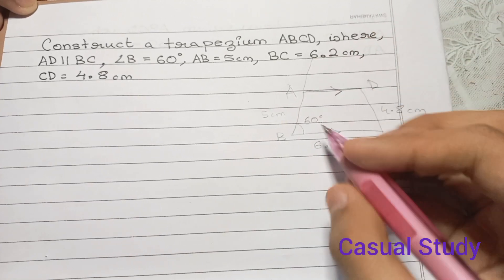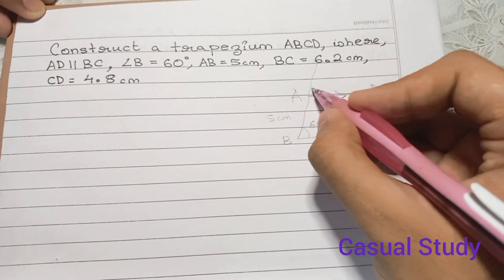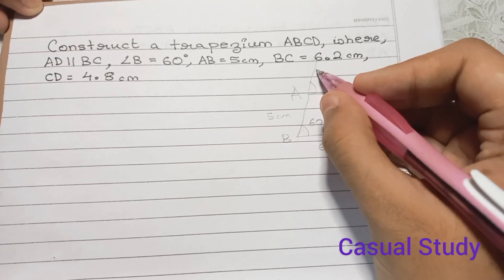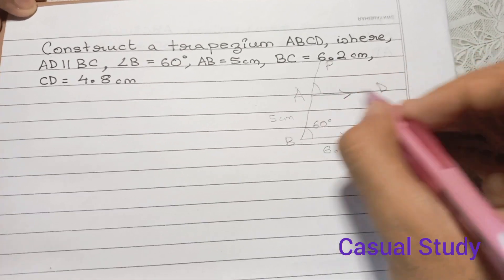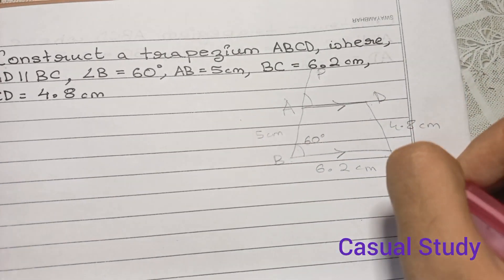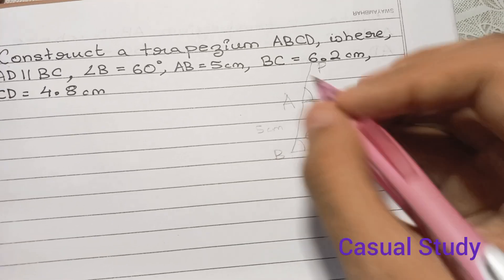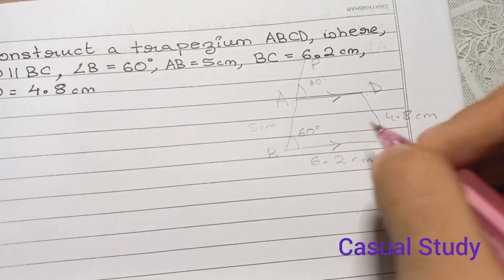We will extend this. Since these are parallel lines, this angle and this angle, let us name this as P. So angle PAD is equal to angle ABC since they are corresponding angles. So with this principle, we will be drawing the figure.